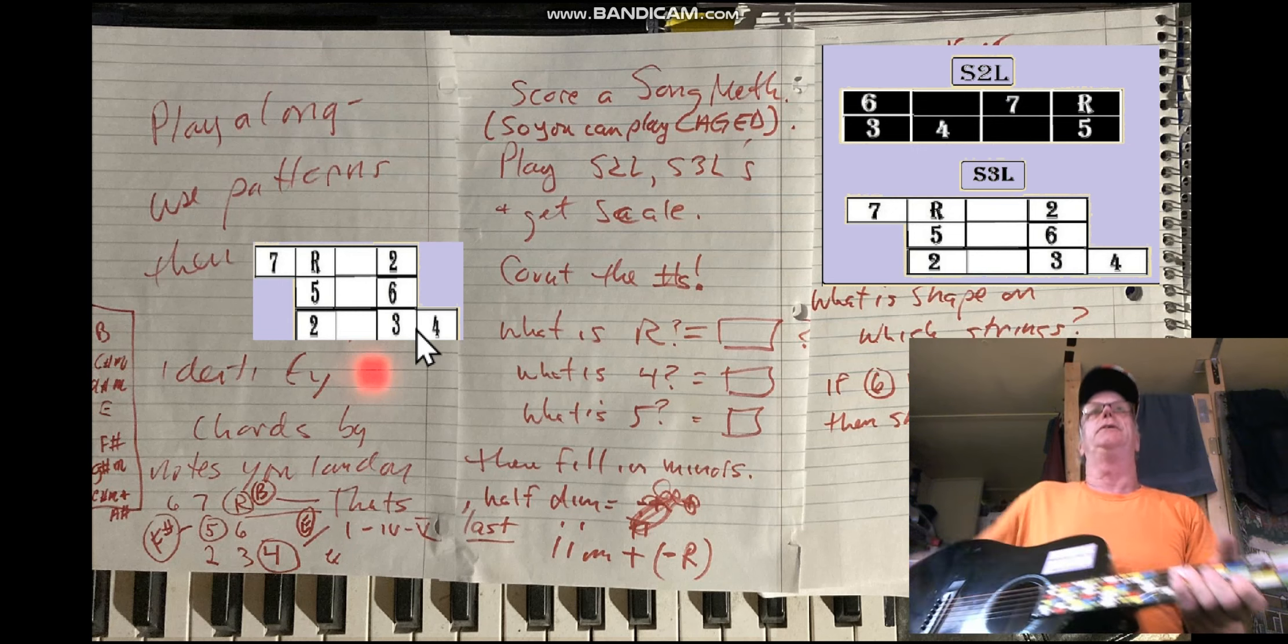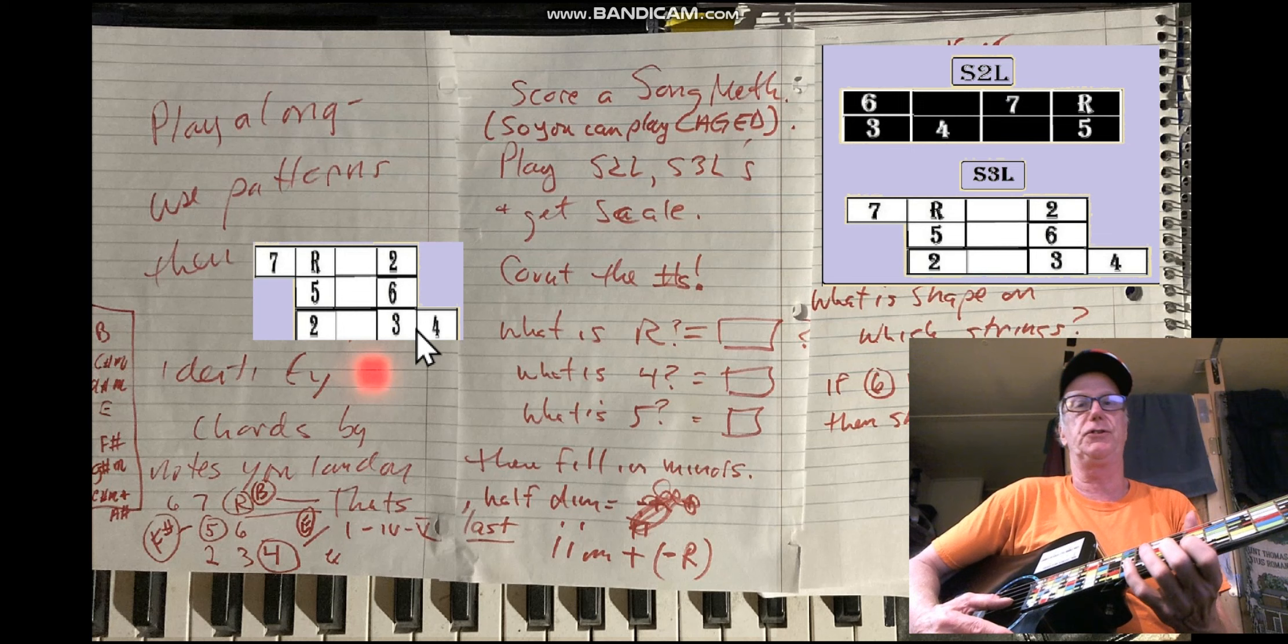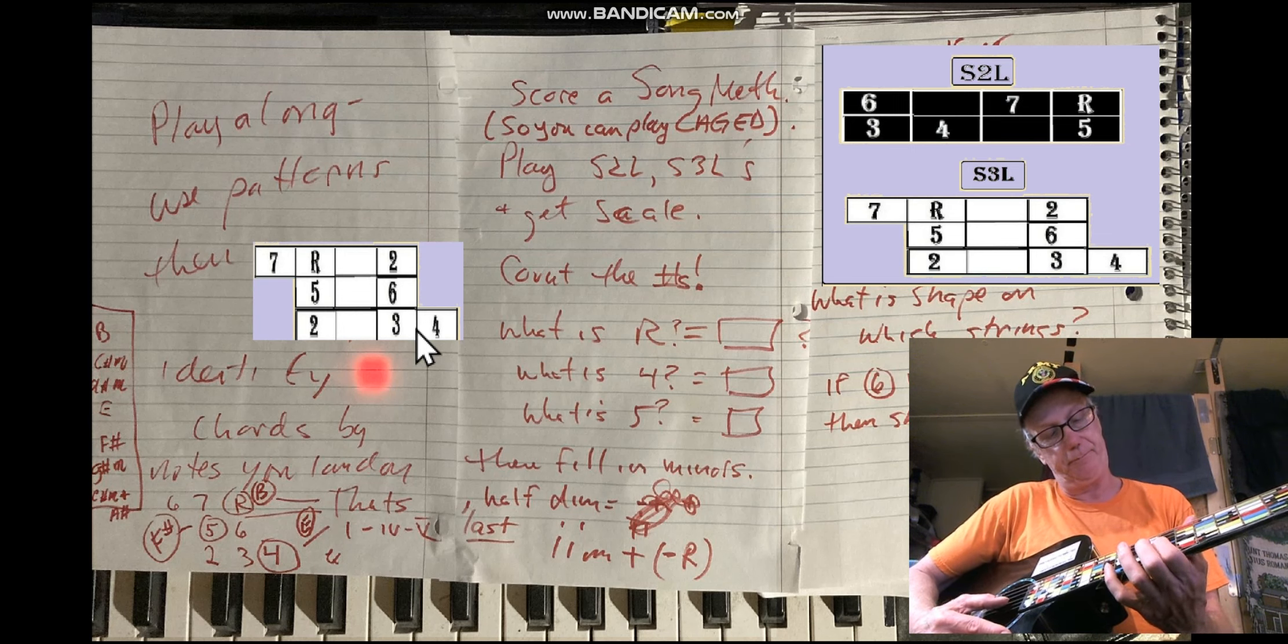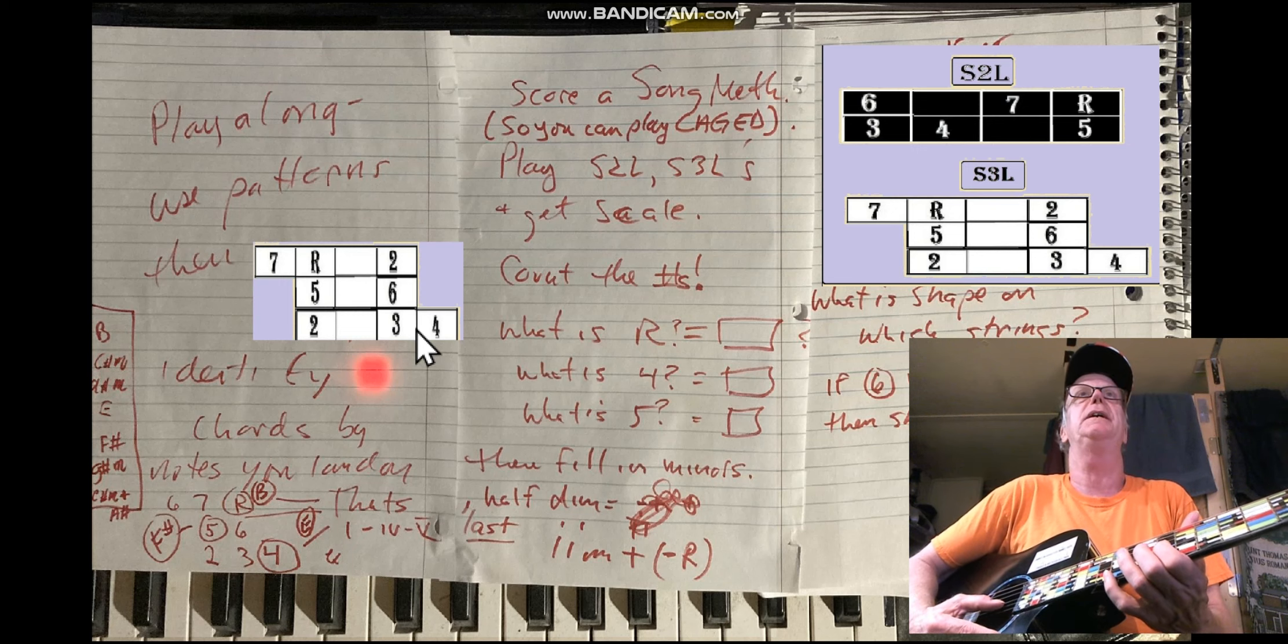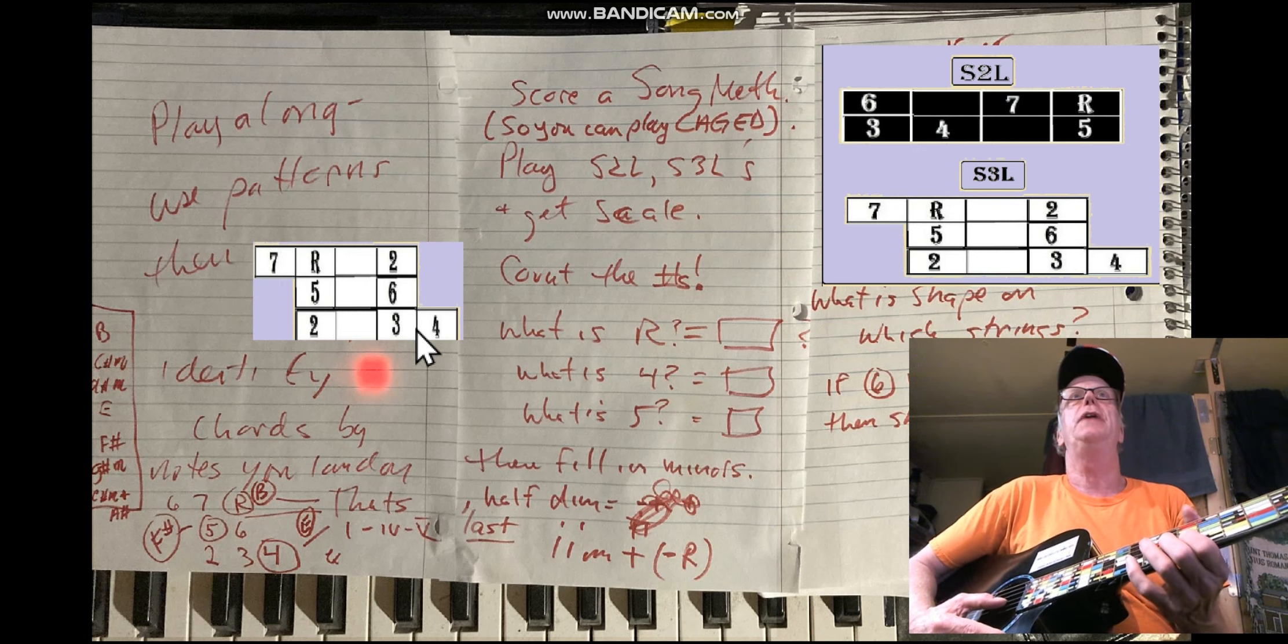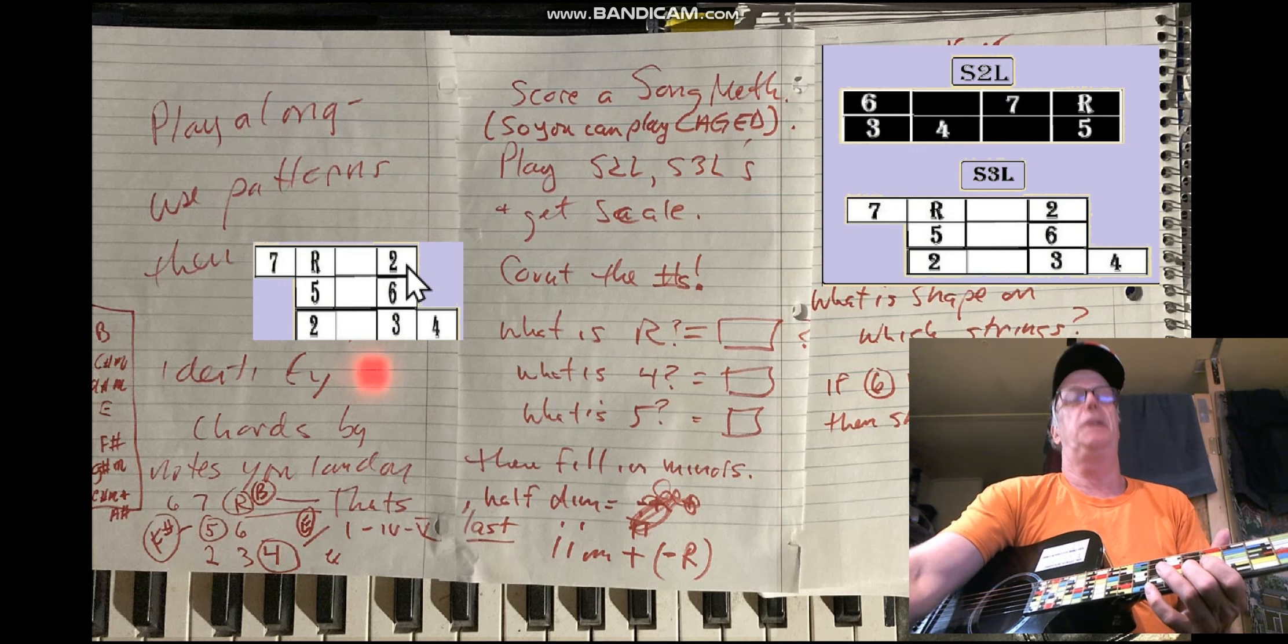So we got the pattern now. All I know at this point in my friend's song is that it's in the key of B and B is the root. So now I can go down to the seven, up to the B, and up to the two.